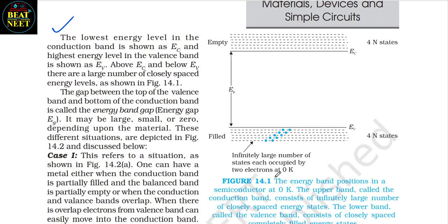The lowest energy level in the conduction band is shown as EC and the highest energy level in the valence band is shown as EV. Above EC and below EV there are a large number of closely spaced energy levels as shown in figure 14.1. The gap between the top of the valence band and the bottom of the conduction band is called the energy band gap (Eg). It may be large, small or zero depending upon the material, as depicted in figure 14.2.